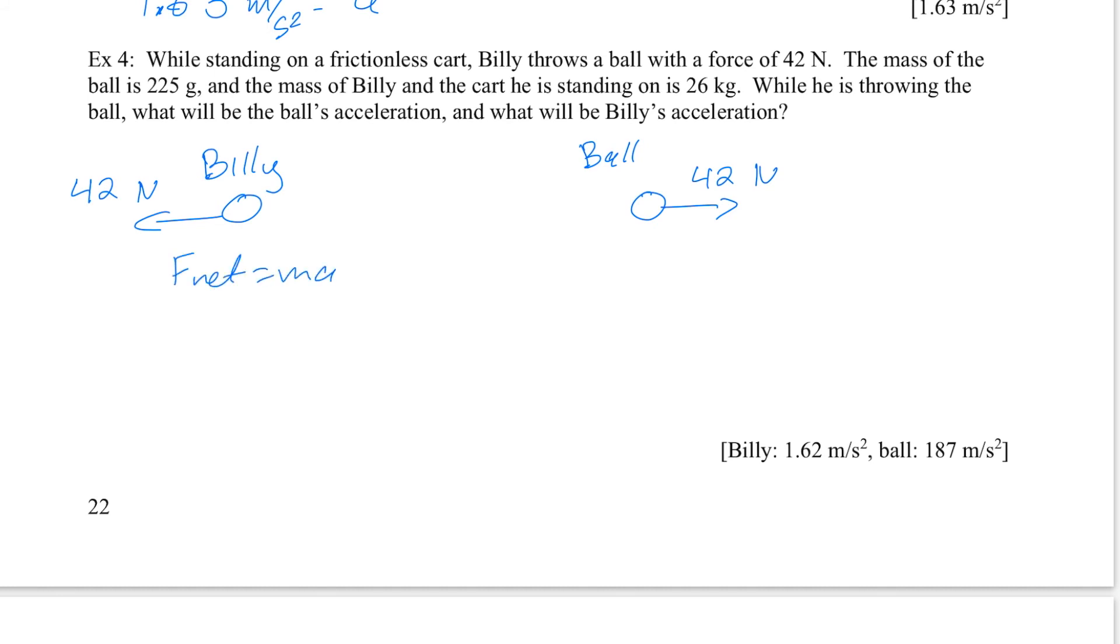When I look at Billy, the only force I see acting on Billy is the 42. It looks like Billy then is going to have to accelerate in this direction. So I'm going to consider to the left to be the positive direction for Billy. So that's 42 newtons. That's equal to Billy's mass and the cart he's on, which is 26 times A. So A is equal to 42 divided by 26, which is 1.62. Because I used all the standard units in my calculations, my final answer will be in the standard units of meters per second squared. So Billy's going to accelerate at 1.62 meters per second squared.